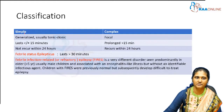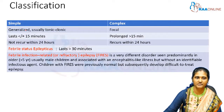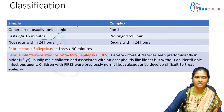Febrile seizures are classified into two types: simple and complex. Simple febrile seizures are generalized tonic-clonic seizures (GTCS) lasting less than 15 minutes and do not recur within 24 hours. Complex febrile seizures, by contrast, are more focal in type, last more than 15 minutes, and recur within 24 hours.